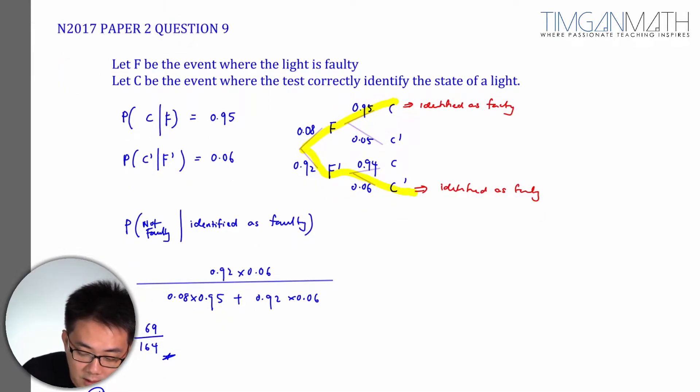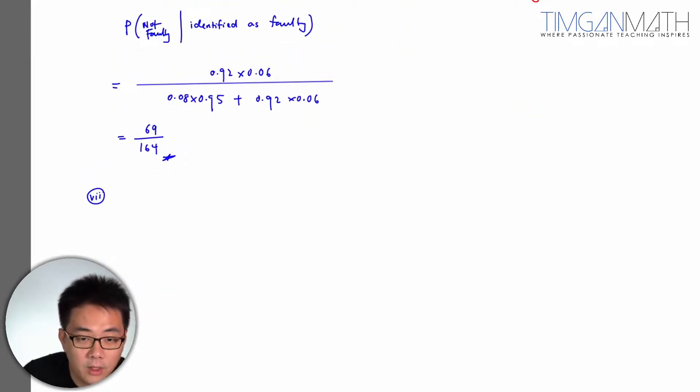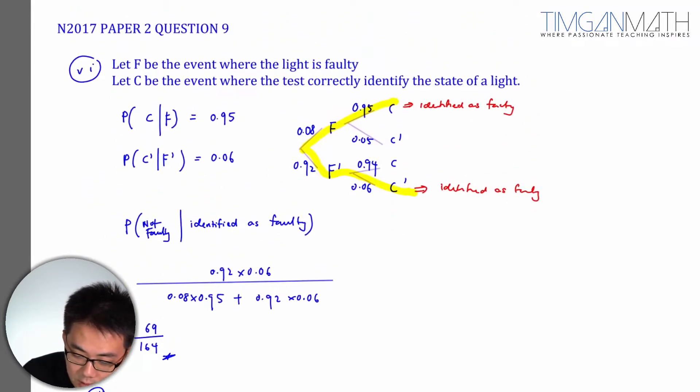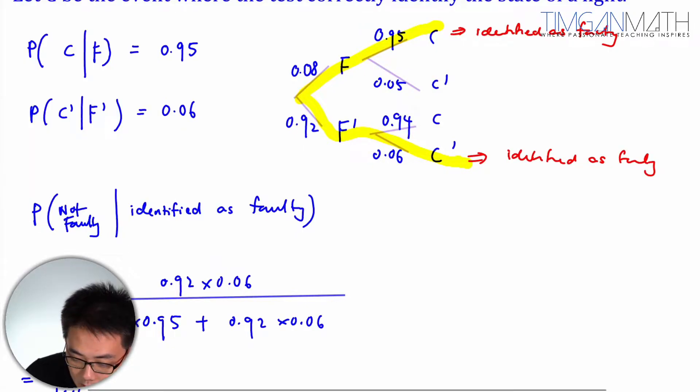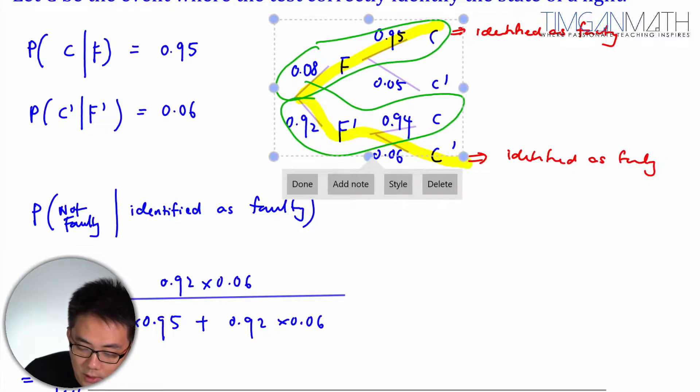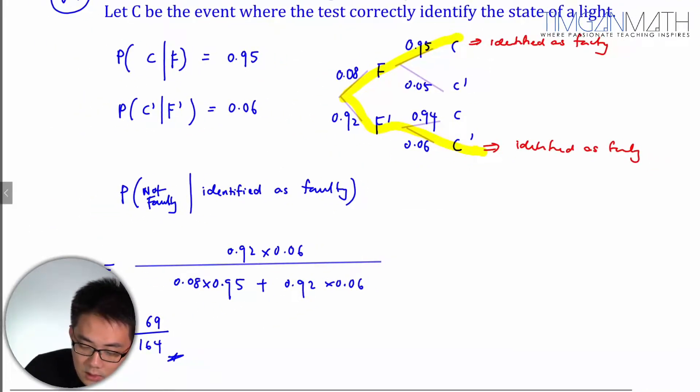Correctly identifies. So if you look at this triangle, these 3 diagrams here, the one that we correctly identify would be faulty and correct, and non-faulty and correct here. So it would be just required probability.